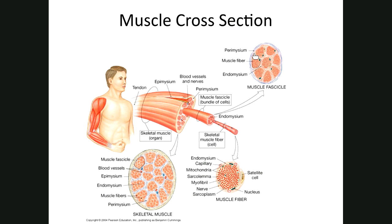The perimysium then goes in to cover each individual muscle fiber as the endomysium — those are invaginations of the perimysium which cover the individual cells. So: epimysium covers the entire muscle, perimysium covers the fascicles, and endomysium covers each individual muscle fiber.